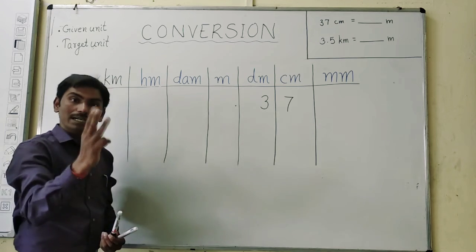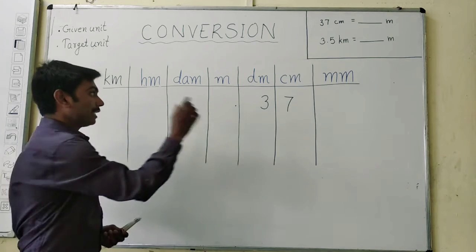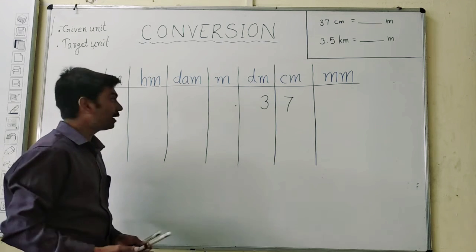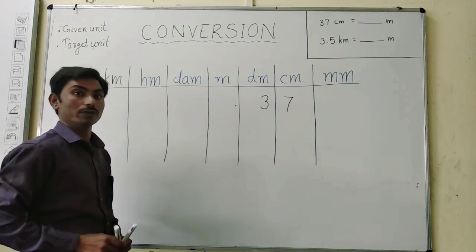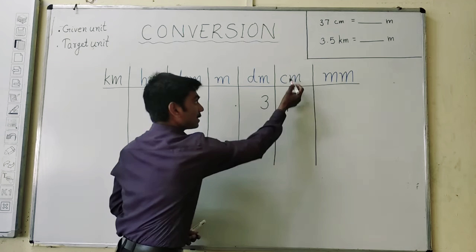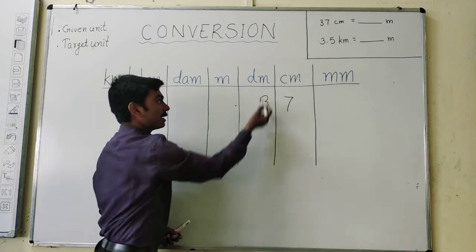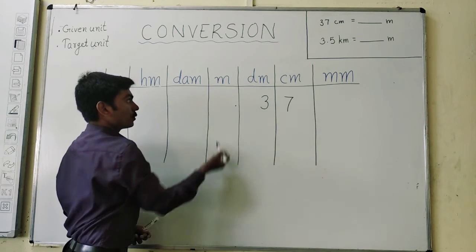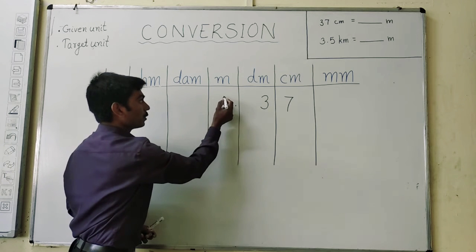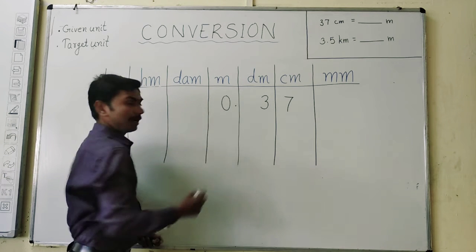The third step is to give 0 as required. Where there is no any digit, we will have to place 0. That's it. In cm, there is digit. In decimeter, there is digit. In meter column, there is no any digit. So we will have to give a 0. And that's it. We have converted it into meter.